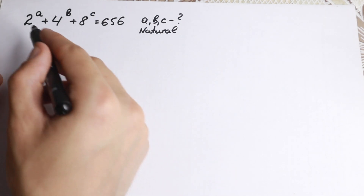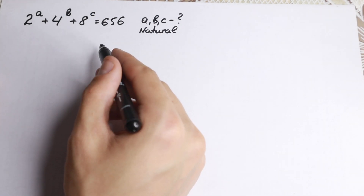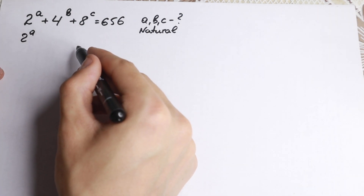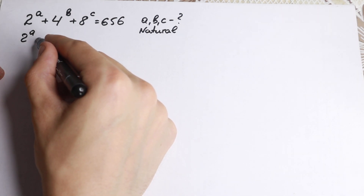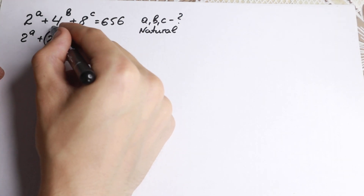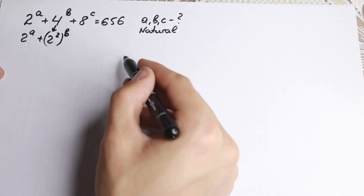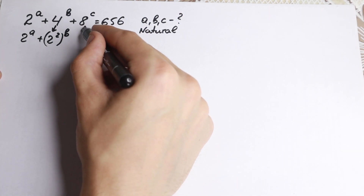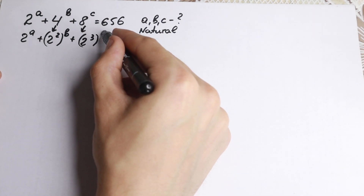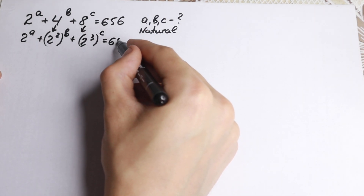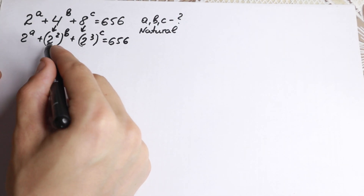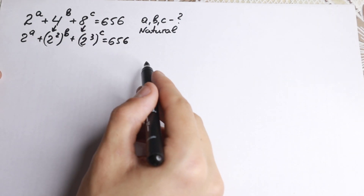First of all we can easily see that 2, 4, and 8 are really good numbers because we can write 2 to the a as is, and 4 to the b as 2 squared raised to the power b. So this 4 can be written as 2 squared. And 8 can be written as 2 cubed, because we know 2 times 2 times 2, raised to the power c, equals 656. So our first step is to write everything with a base of 2.